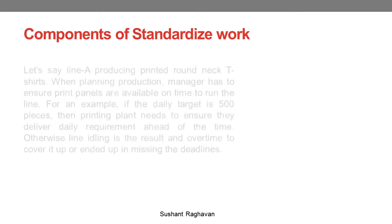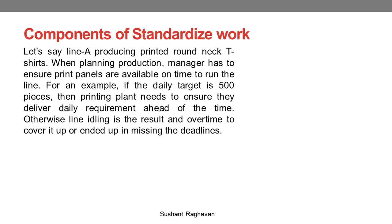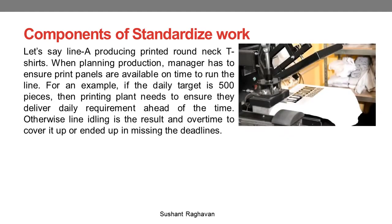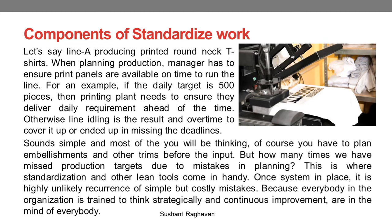Let's say line A is producing printed round neck t-shirts. When planning, the production manager has to ensure print panels are available on time to run the line. For example, if the daily target is 500 pieces, then the printing plan needs to ensure they deliver the daily requirement ahead of time. Otherwise, line idling results, along with overtime to cover it or missing deadlines. But how many times have we missed production targets due to mistakes in planning?